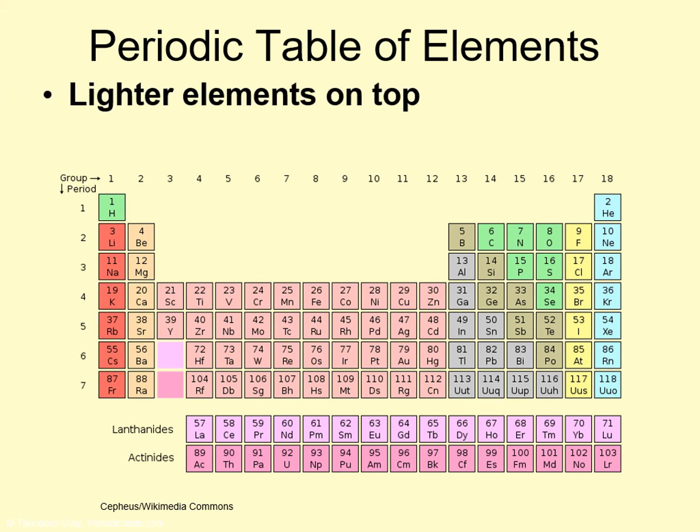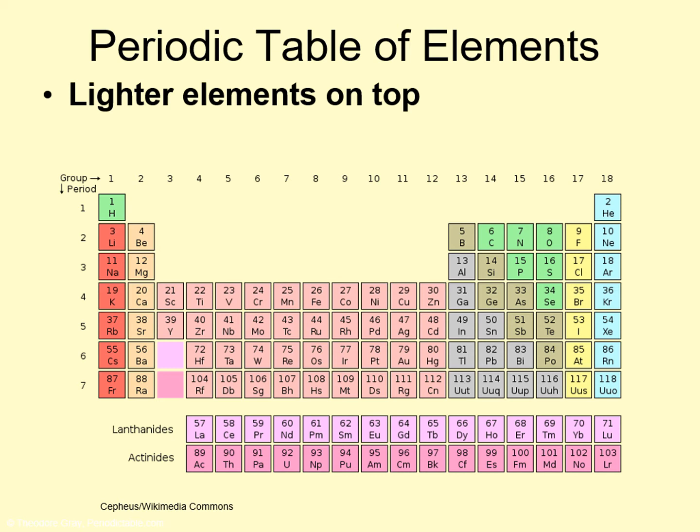First, the elements at the top of the table are lighter than the ones at the bottom — the individual atoms are heavier as you go down the table. Also, notice those two bottom rows labeled lanthanides and actinides. Those really belong in the rows above, but we don't put them there because they would make the table too difficult to show clearly on a single page. The other important idea is that the elements at the top of the table are usually much more common than the ones at the bottom. There are exceptions — ones like boron and beryllium are fairly rare — but it holds as a broad trend. This is a really important idea in astronomy.